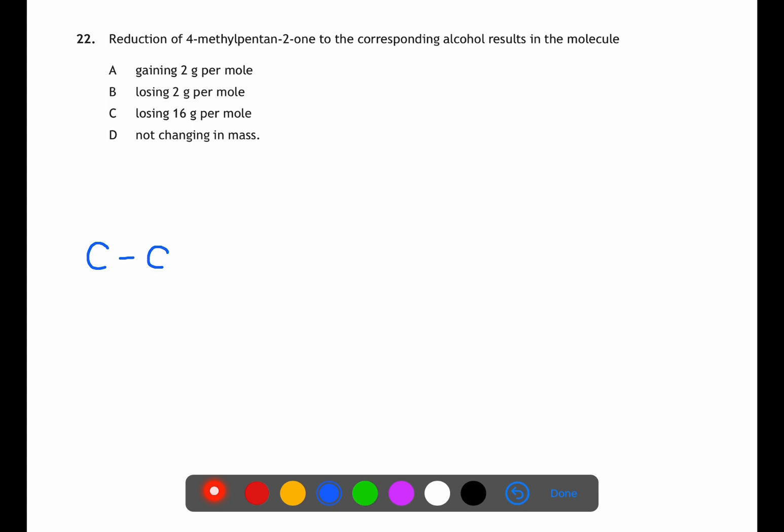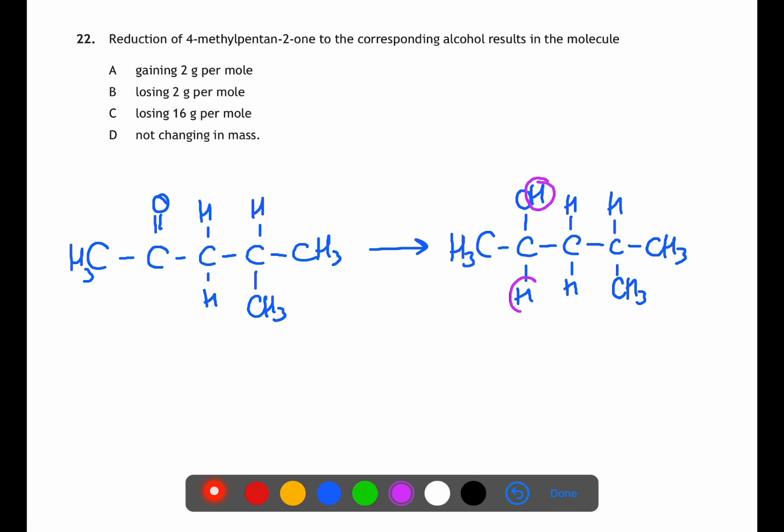For question 22 we're looking at the reduction of 4-methyl-pentan-2-one. The structure of 4-methyl-pentan-2-one has 5 carbons singly bonded and on carbon 2 we have a carbonyl group and on carbon 4 we have a methyl group. When we reduce this back to the corresponding alcohol we make 4-methyl-pentan-2-ol. To do this we add on two hydrogen atoms. This would weigh 2g so for each mole we would gain 2g. This is answer A.